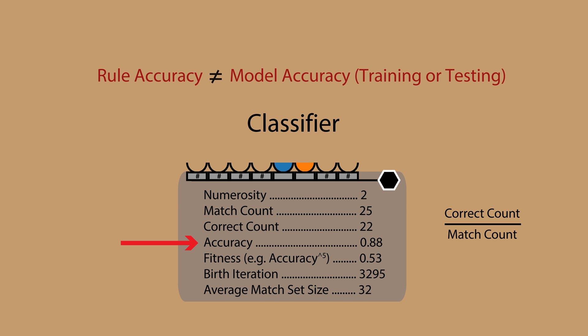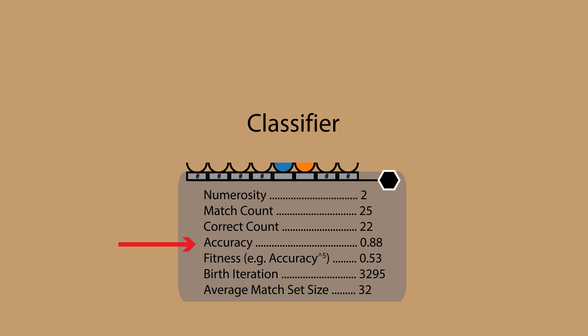Note that rule accuracy is different than the training accuracy of a machine learning model. Rule fitness is typically a function of accuracy calculated to reflect the quality or utility of a classifier. Fitness is a critical parameter as it probabilistically influences the survival, reproductive success, and the predictive influence of a rule within the population as a whole.